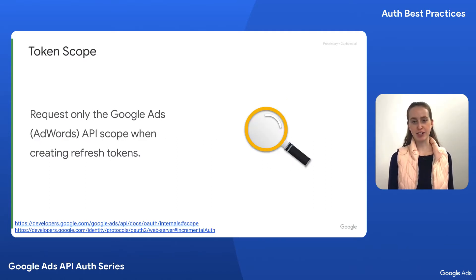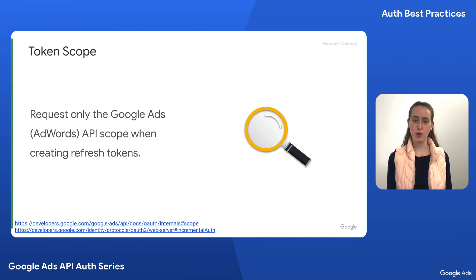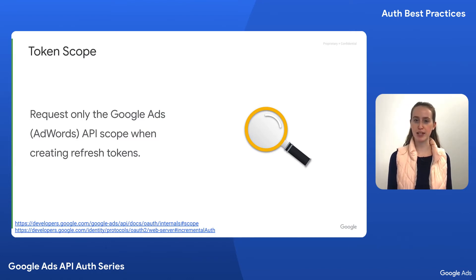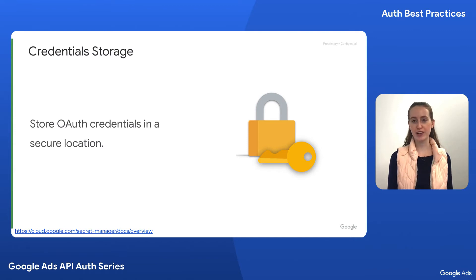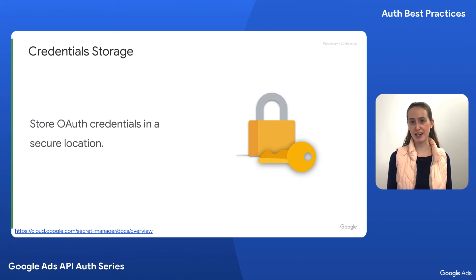When generating your refresh tokens, only request the Google Ads API scope, which still goes by the name AdWords. Requesting additional permissions may deter users from granting permission, or if permission is nonetheless granted, it could allow for malicious or incidental mistreatment of user data. Note that the client libraries request this scope automatically. Be sure to store your OAuth credentials in a secure location to prevent bad actors from impersonating you and accessing your users' data. Do not commit your secrets to code, even in private repositories.